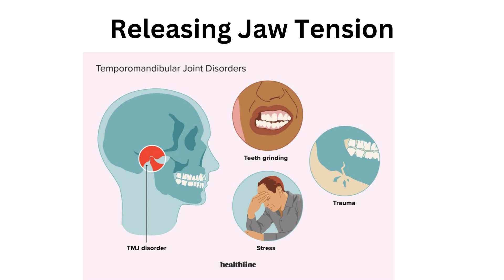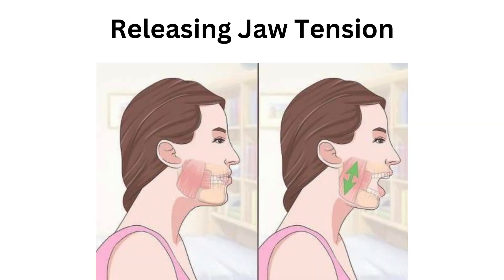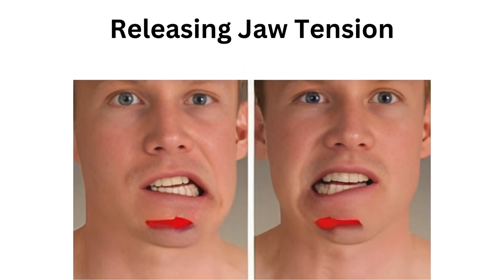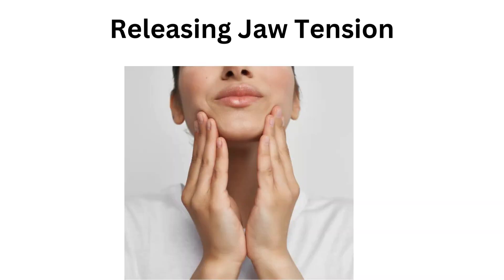Tension in your jaw stops your bones from developing, so what do you have to do to eliminate it? Stretching: gently open your mouth as wide as possible without discomfort, then close it slowly. Repeat this several times to stretch the jaw muscles. Side-to-side movement: slowly move your jaw from side to side to loosen up tight muscles. Massaging: use your fingers to gently massage the muscles around your jaw, particularly in the areas where you feel tension.